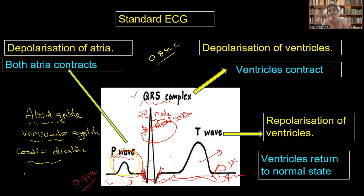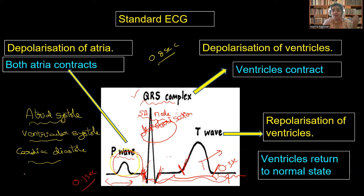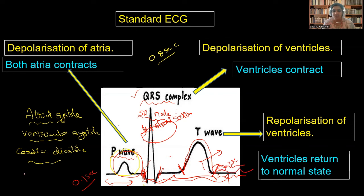When blood is sent into the pulmonary artery and aorta, the ventricles start relaxing — repolarization of the ventricles starts. Here the starting of ventricular relaxation begins, and here the ventricles relax completely, that is ventricular diastole. Then the entire heart relaxes, that is cardiac diastole proceeds.